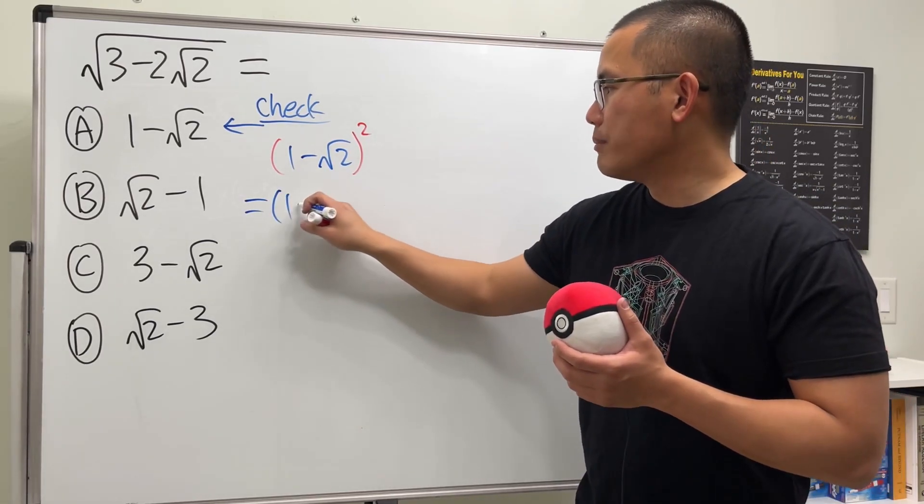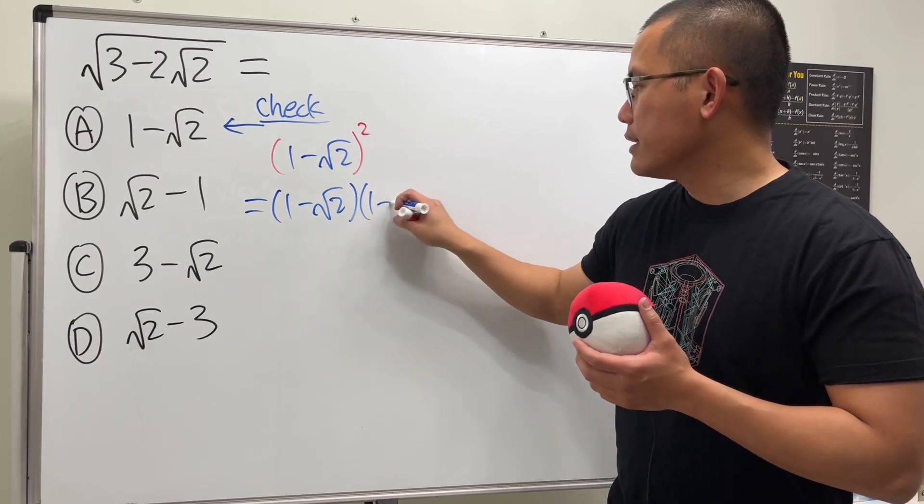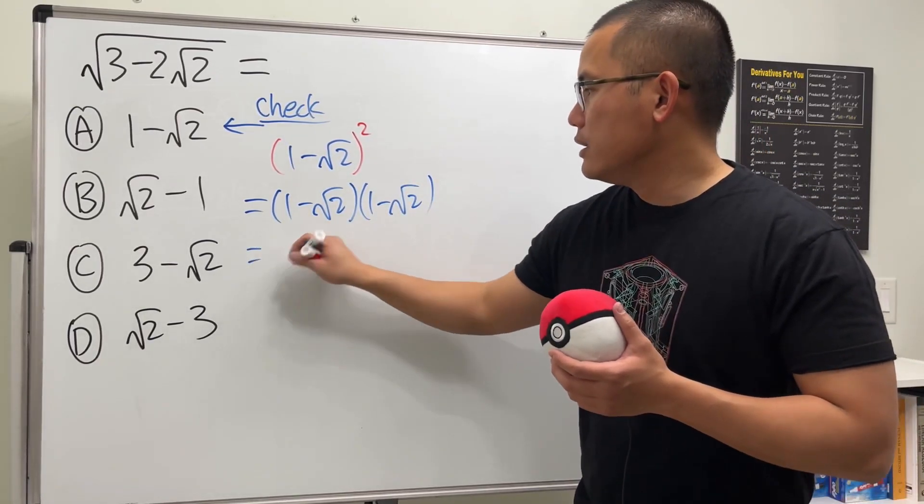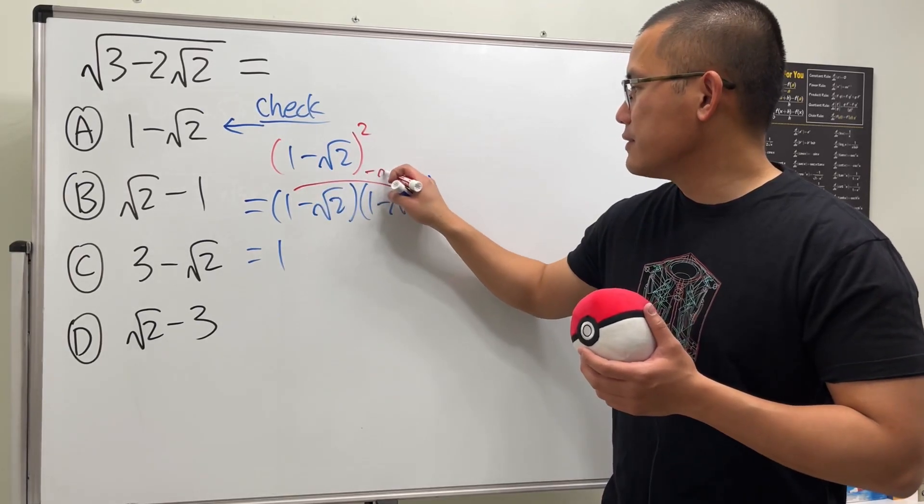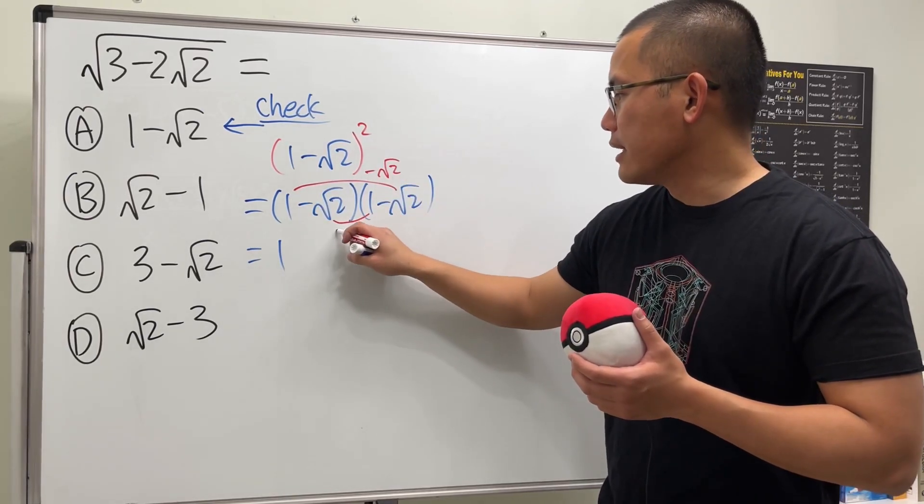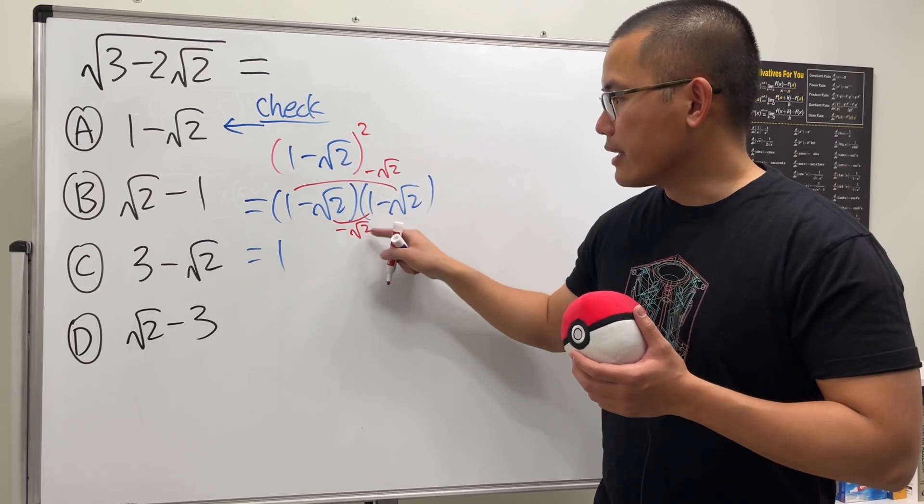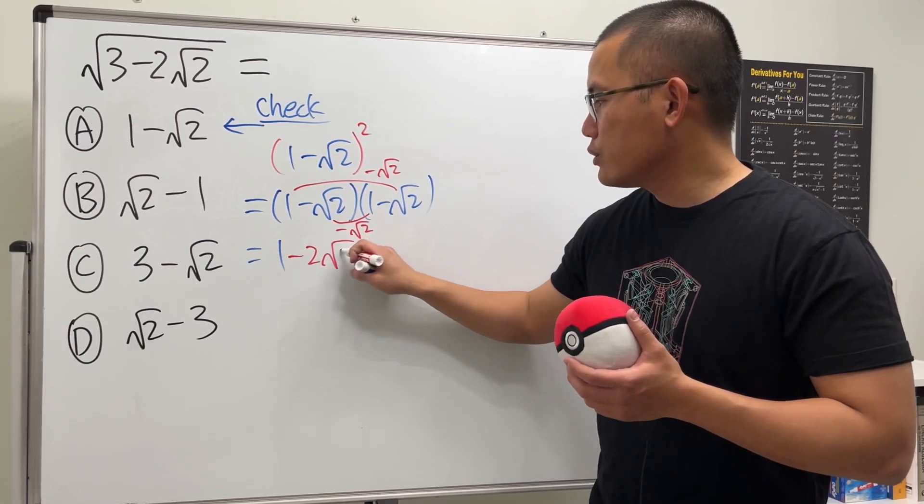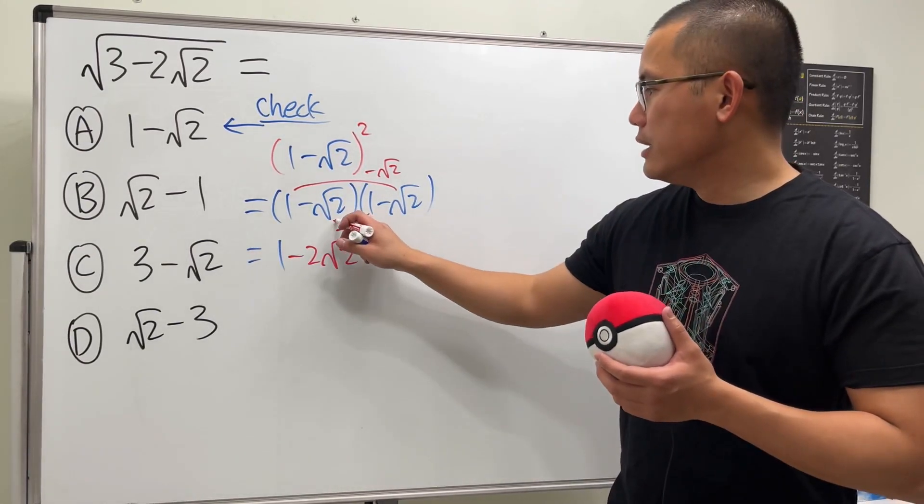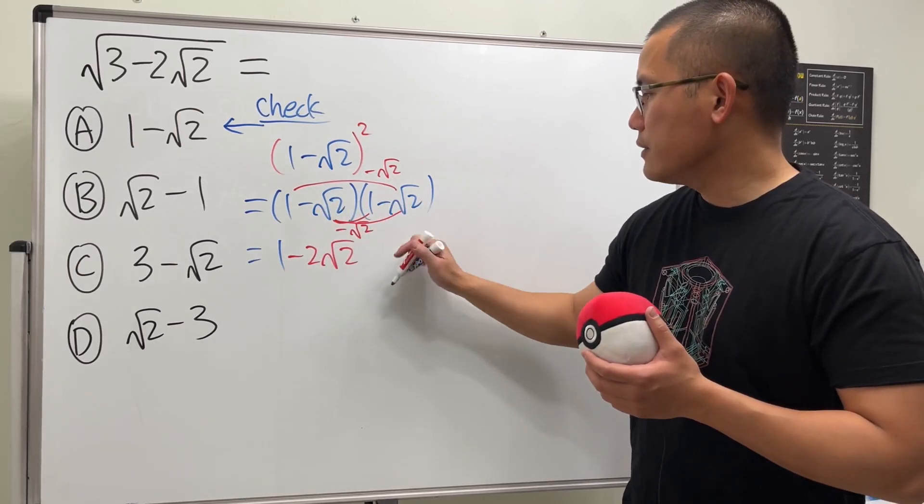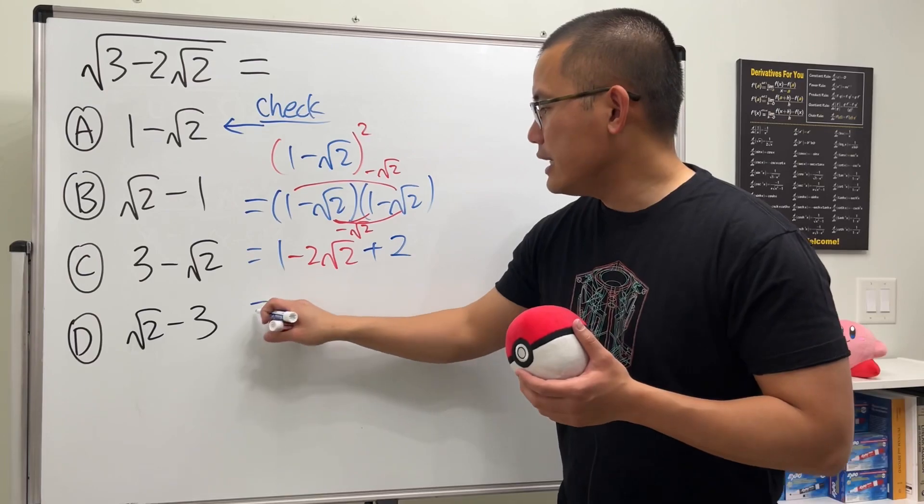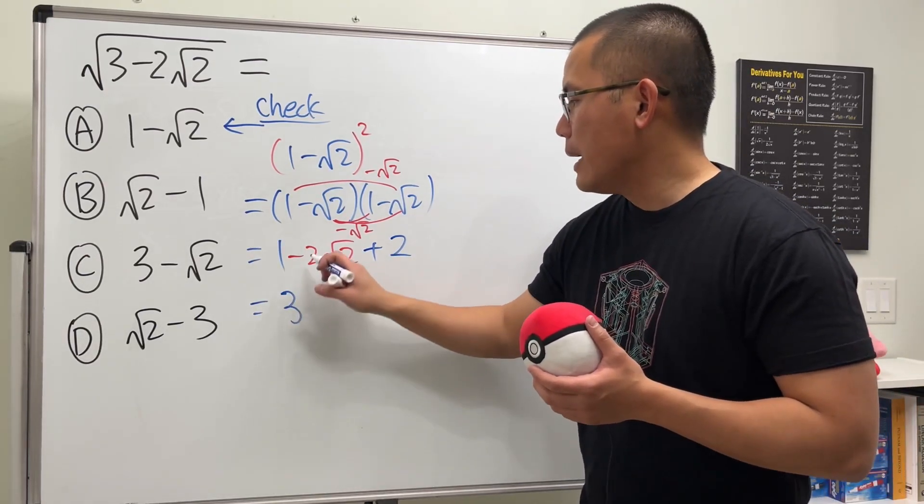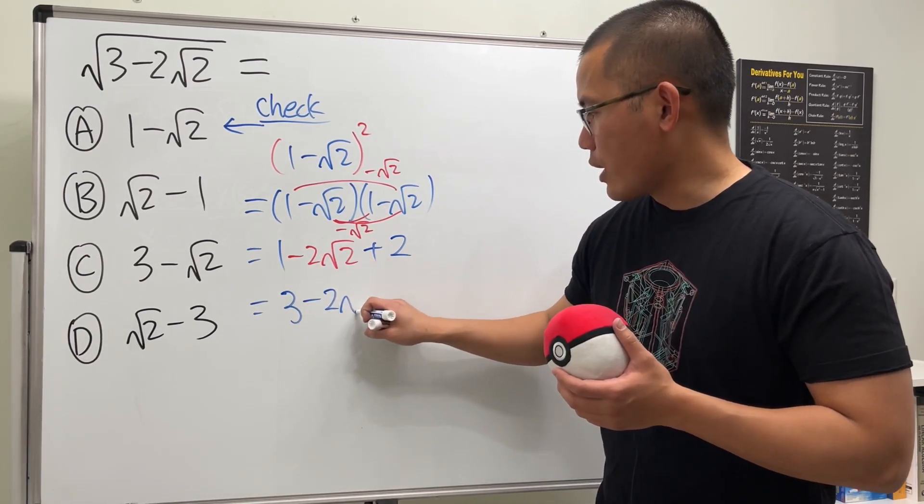This is going to be 1×1 which is 1, and then this times this is negative √2, and this times that is another negative √2. Together we get -2√2. Lastly, this times this is positive √2 times √2 is 2. You see that this and that together is just 3-2√2.